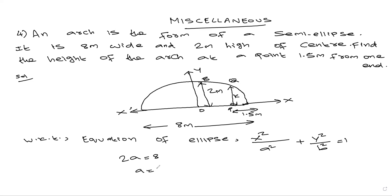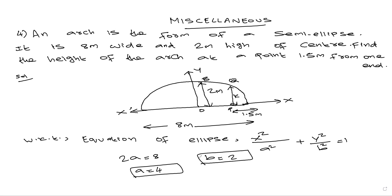So a = 8/4 = 4. Horizontal length is the semi-major axis, vertical length is the semi-minor axis. Semi-minor axis b = 2. So a = 4, b = 2.